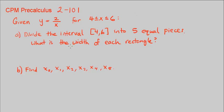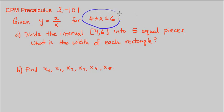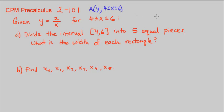This is CPM Pre-Calculus Chapter 2, Number 101. Here we're given y is equal to 2 over x, and we have a region from 4 to 6. We're going to be looking for the area under y, between y and our x-axis, between 4 and 6. Let me just draw a quick rough sketch.